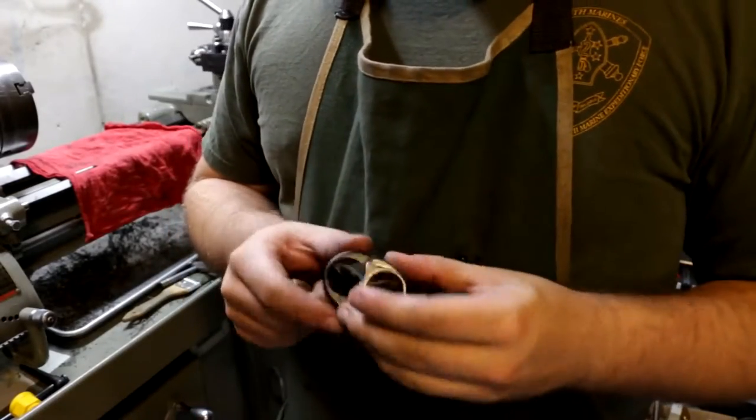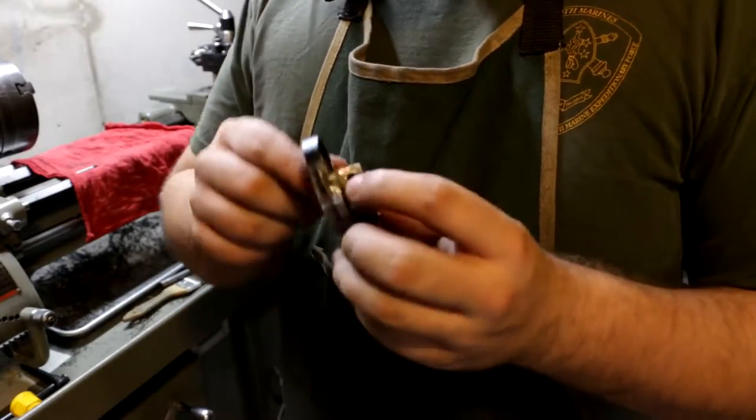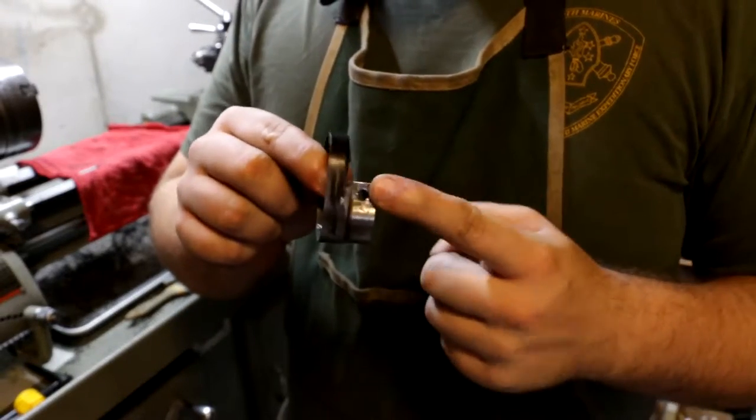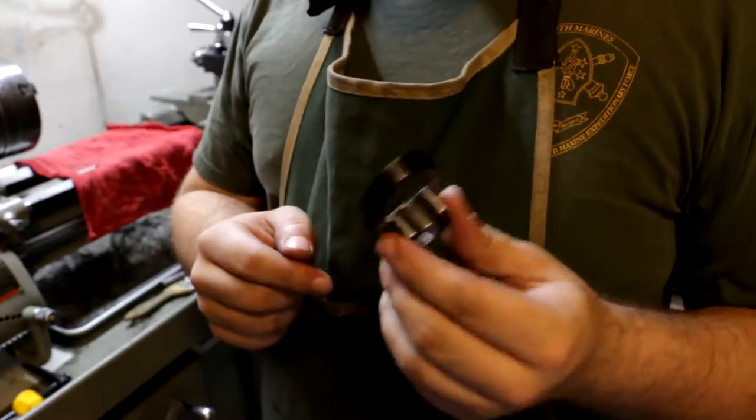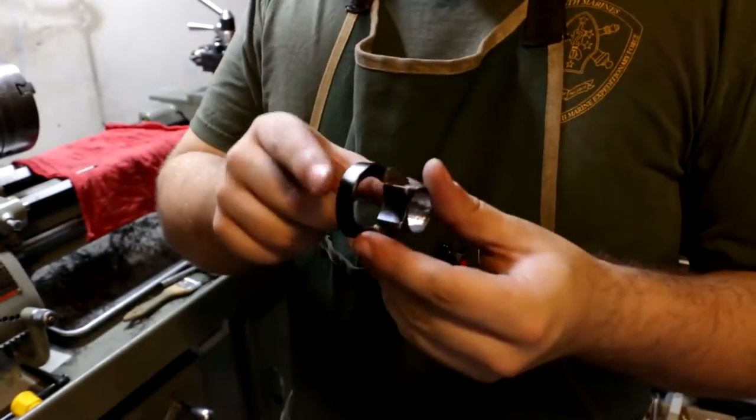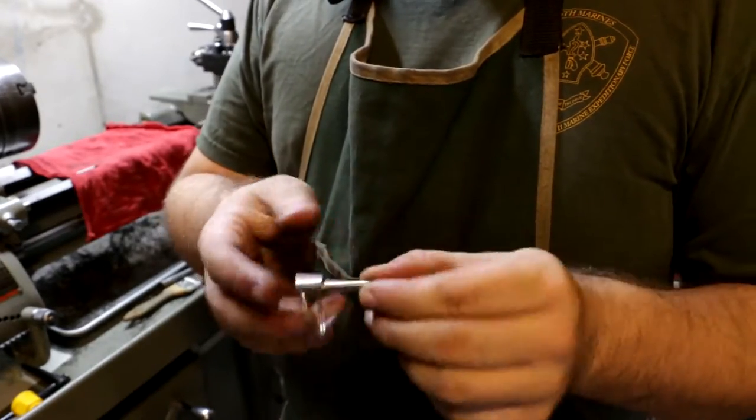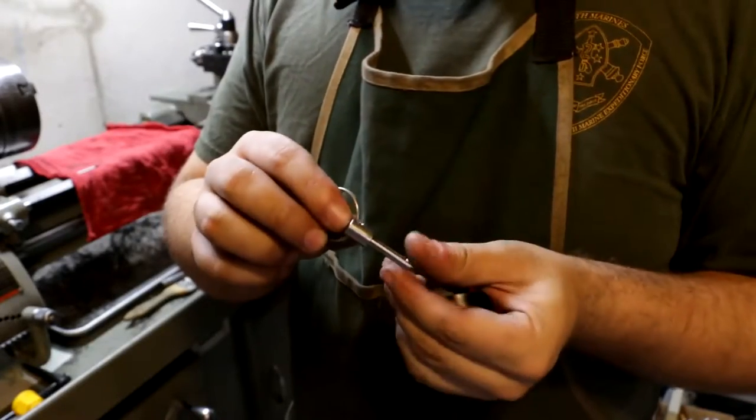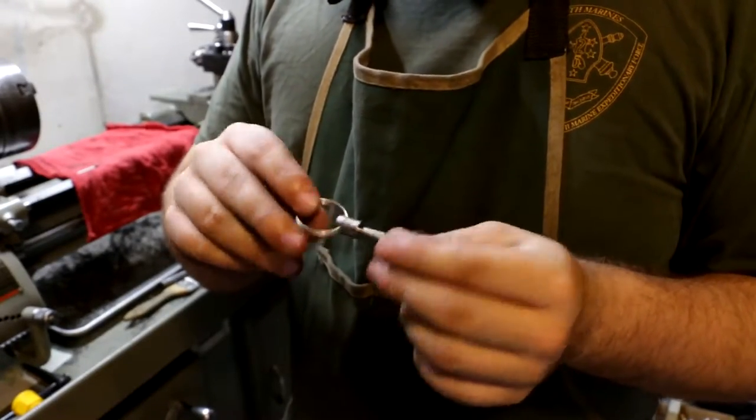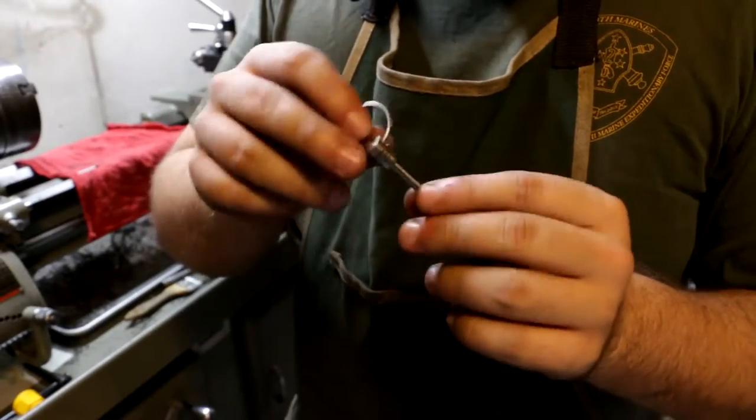Alright guys, I mentioned before that I was looking for some way to retain the handguard retainer and the gas tube without using the locking levers that come typically on AKs and such. I had a few things in mind and I finally found something. I found these heavy-duty push pins from a company in Ohio called Jurgens—not the lotion people—but they make these heavy-duty detent pins.